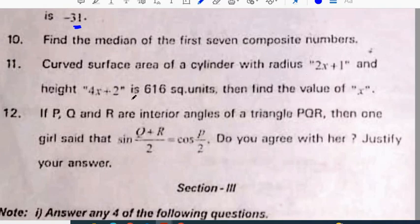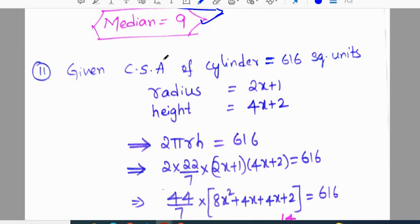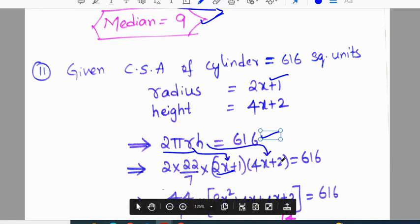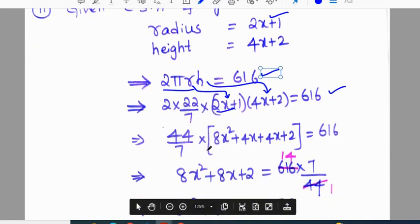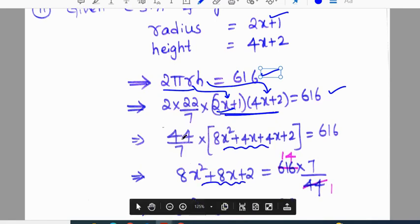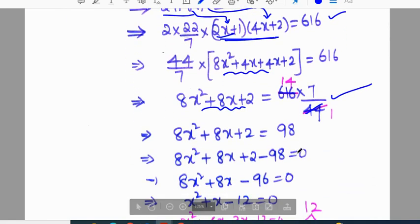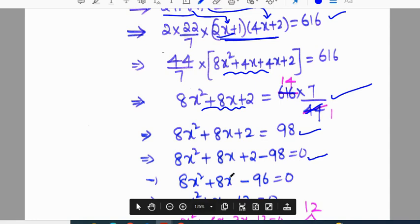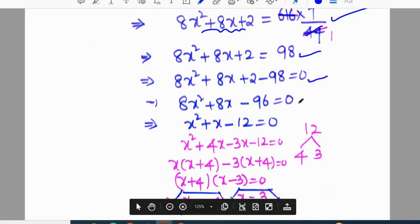Surface area of a cylinder with radius 2x plus 1 and height 4x plus 2 is 616 square units. Find the value of x. Curved surface area of cylinder is given as 616, so 2πrh is equal to 616. Radius is given as 2x plus 1, height is given as 4x plus 2. 2 into 22 by 7 into (2x plus 1) into (4x plus 2) equals 616. After multiplying the binomial we get 8x square plus 8x plus 2.